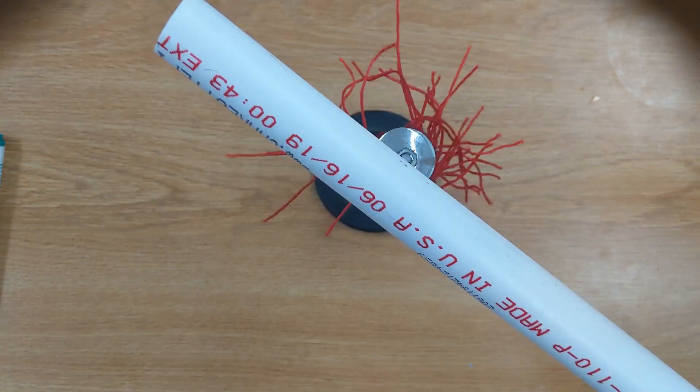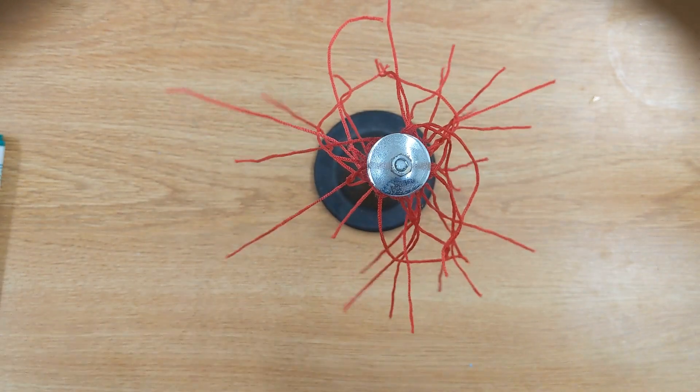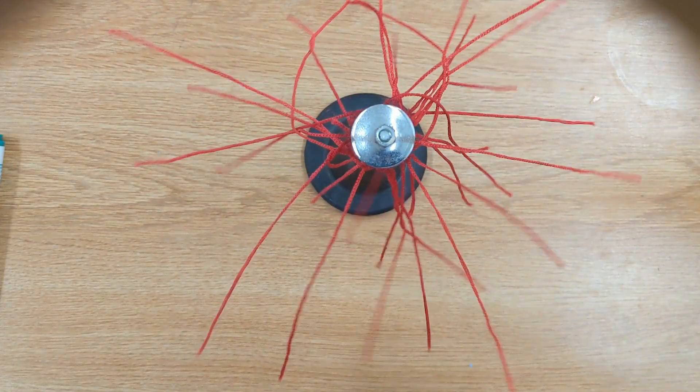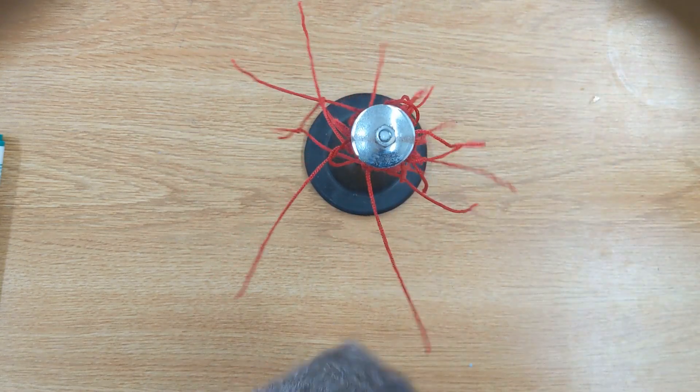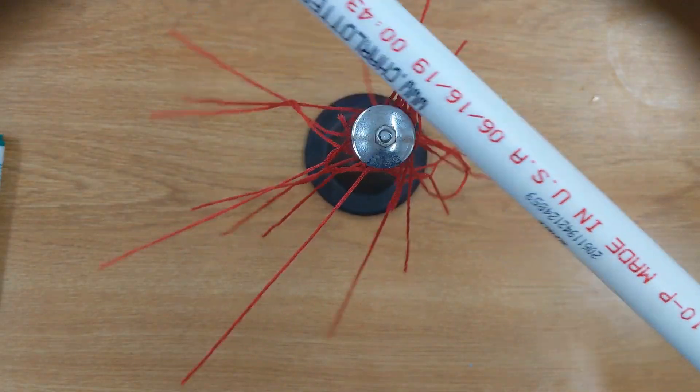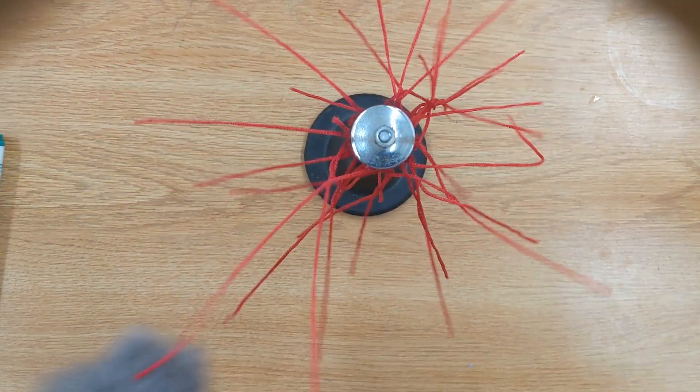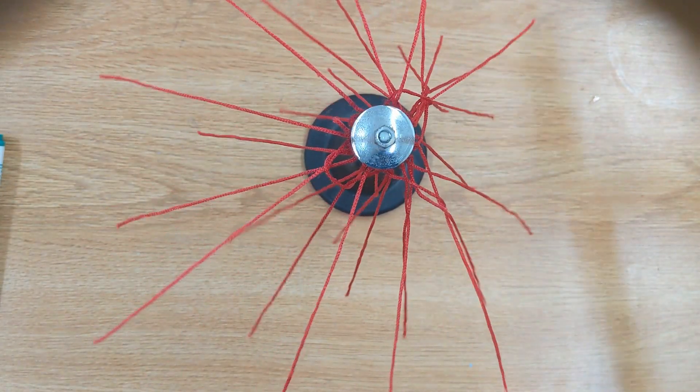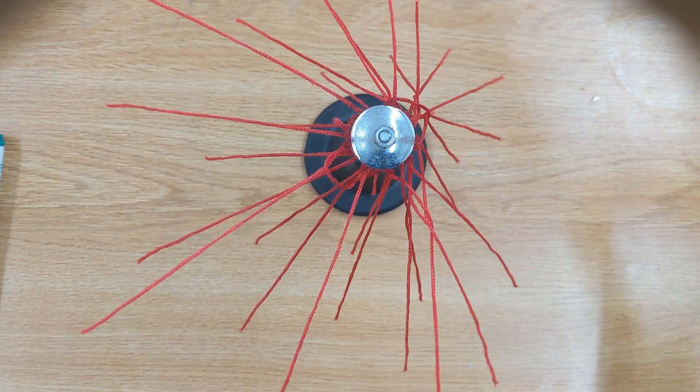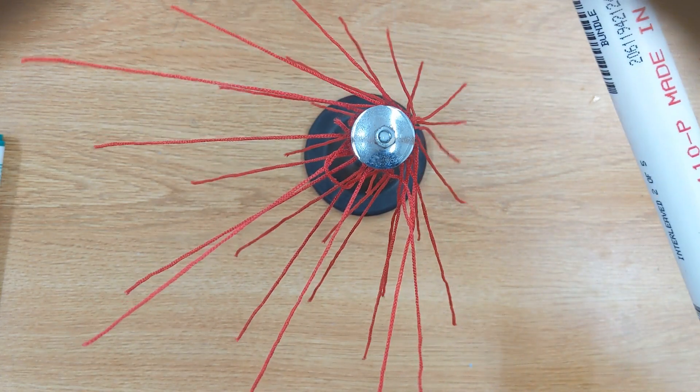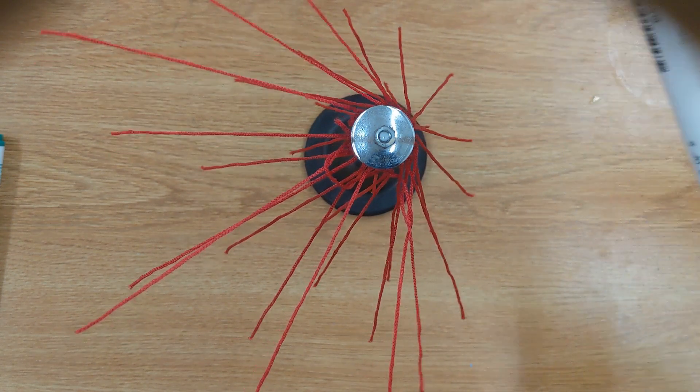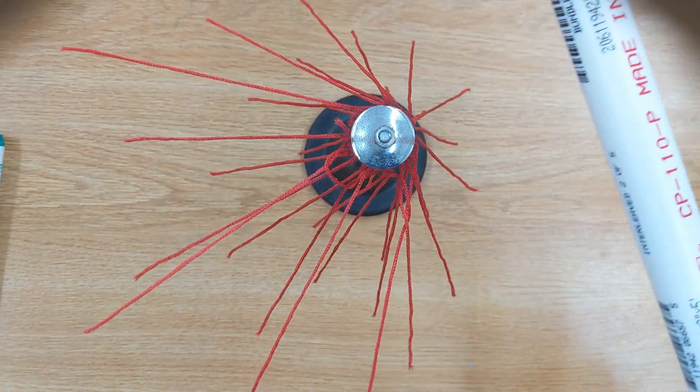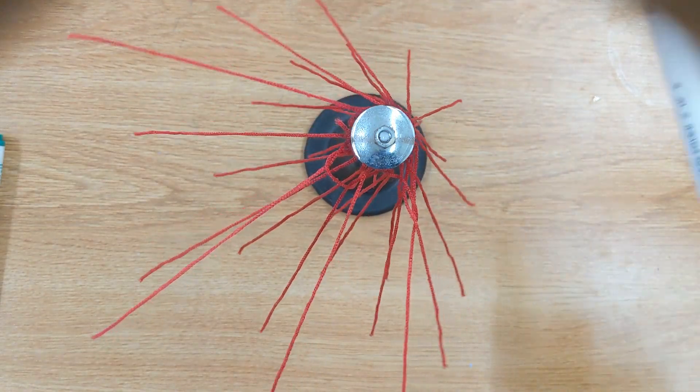So these threads are all spreading out. And they're showing us the direction of the electric field around this object. Now what happens if I bring the negative rod near those already coated in negative charge strands? Well, they're being pushed away. So we can see the electric field is changing due to the presence of another charge.